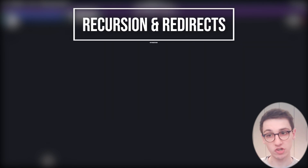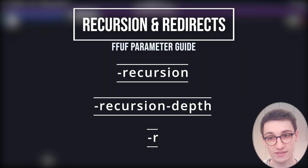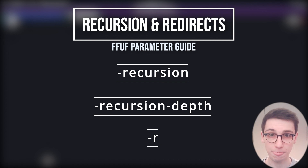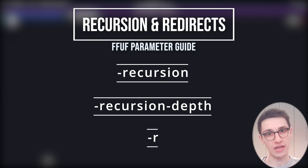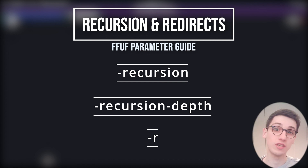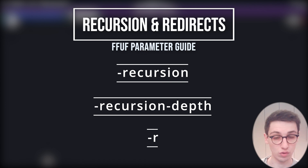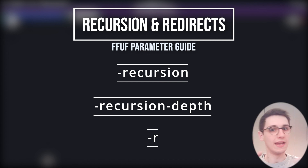Now let's look at recursion and redirects. With --recursion you can scan recursively — this only works if FUZZ is at the end of the URL. Once FFUF finds a valid endpoint it adds another slash and another FUZZ keyword, fuzzing that whole directory again. It keeps going recursively so you can find every file on the server. With --recursion-depth you can set a limit, for example depth of two so it doesn't recurse infinitely.